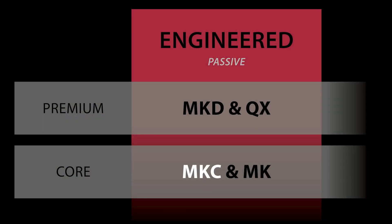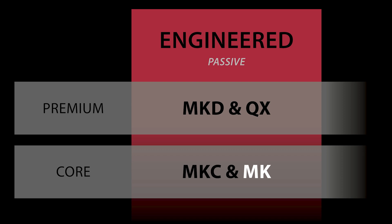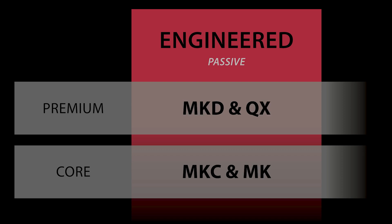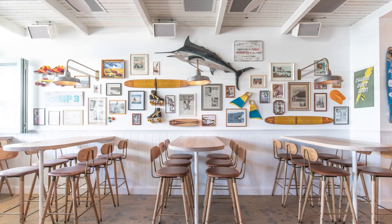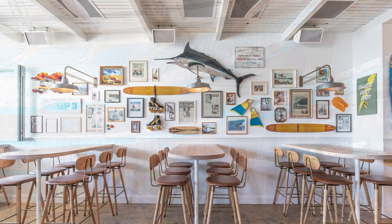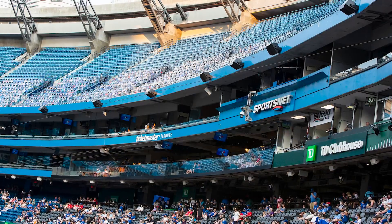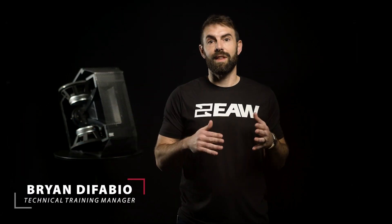The Engineered Systems loudspeaker product line is made up of four series: MKC, MK, MKD, and QX. With this comprehensive product line, EAW supports your designs from small all the way to stadium-sized venues. Though these are four distinct series, we like to look at them as one solution with output and directivity increasing as you step up.